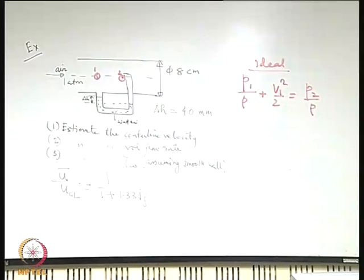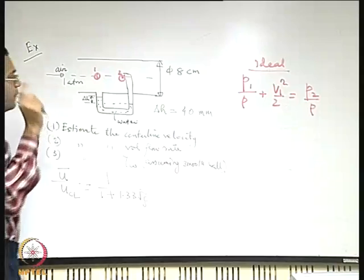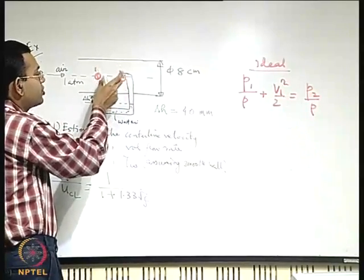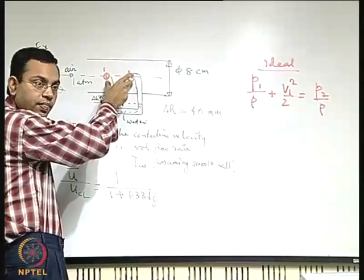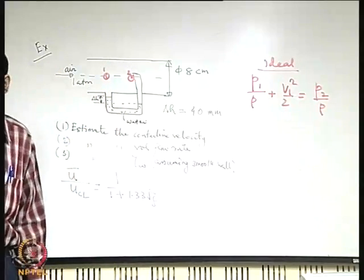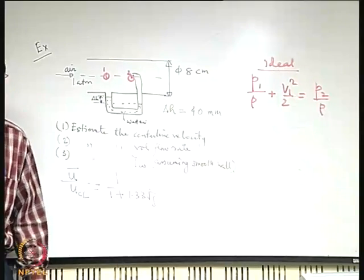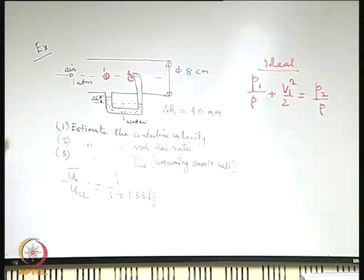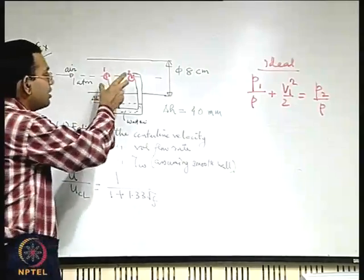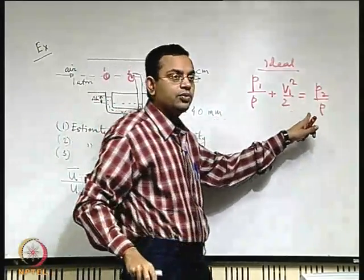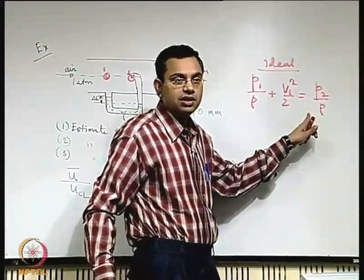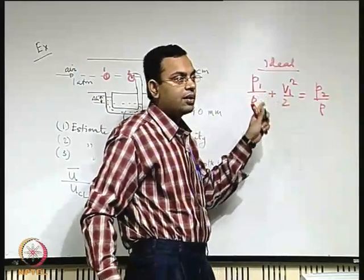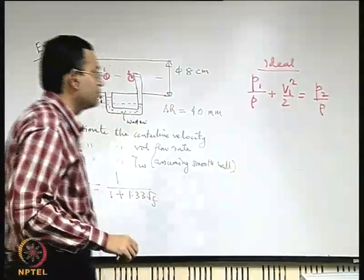A careless engineer might make a mistake by placing points 1 and 2 far apart, making the head loss between them significant. If the two points are very close, that head loss may not be important. But placing them at some distance is a wrong approach because the idealized equation does not account for head loss, and using it to predict velocity at point 1 will be erroneous if head losses are significant.